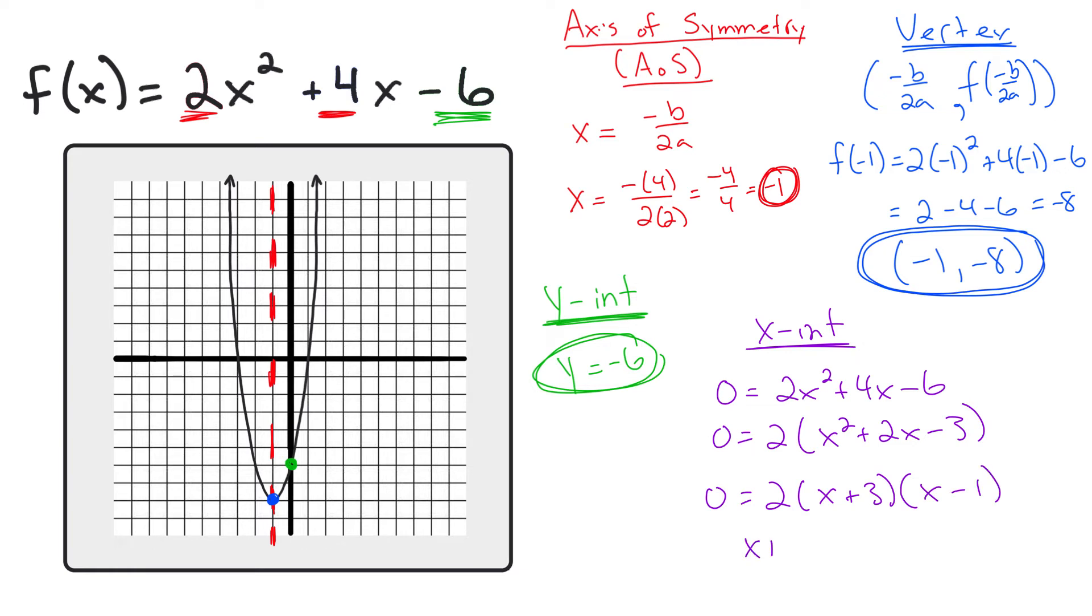That will be true when x plus 3 equals 0, or when x minus 1 is equal to 0. I'd solve x plus 3 equals 0 by subtracting 3 from both sides and getting x is equal to negative 3. I'd solve the other one by adding 1 to the other side and getting x equals 1. These are my two x-intercepts at x equals negative 3 and positive 1. So what do you know? That's where my graph hits the x-axis.